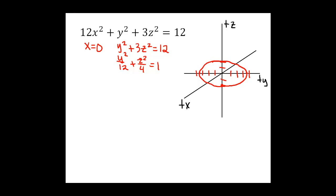We're going to go ahead and do the next trace. We'll just do y = 0 next, so we'll have 12x² + 3z² = 12. So we've got another ellipse. If we divide through by 12, we'll get x²/1 + z²/4 = 1.